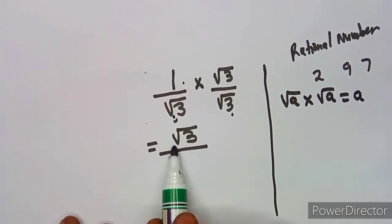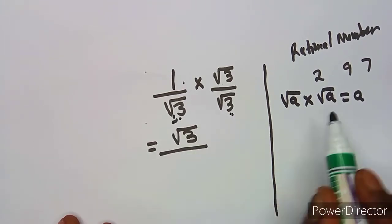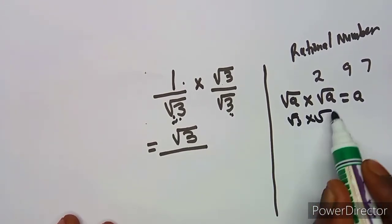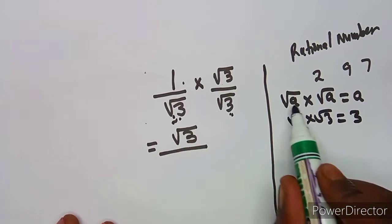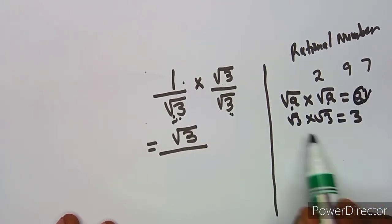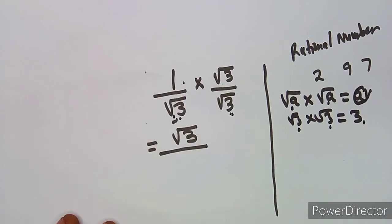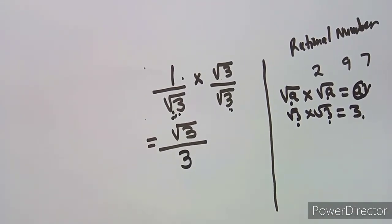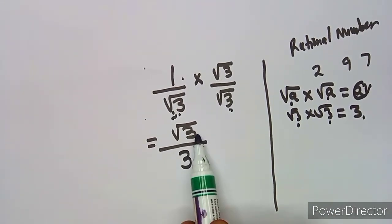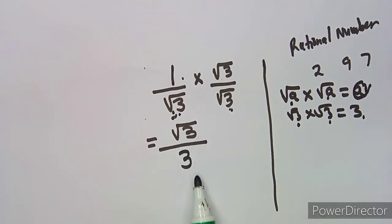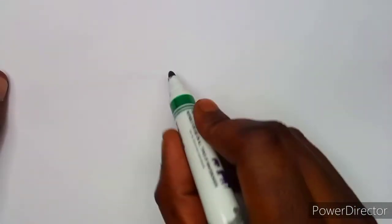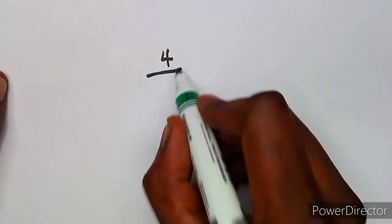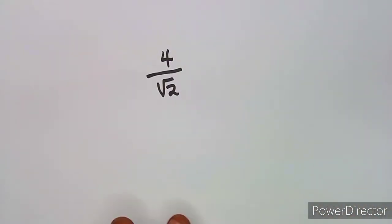Square root of three over square root of three has no effect — it is the same as one. But the moment you do this, you are going to have one times square root of three, which is square root of three, over square root of three times square root of three. From your laws of surds: square root of a times square root of a gives us a. So square root of three times square root of three gives us three. Never cancel the number under the square root with the number outside — these two do not have a relationship.